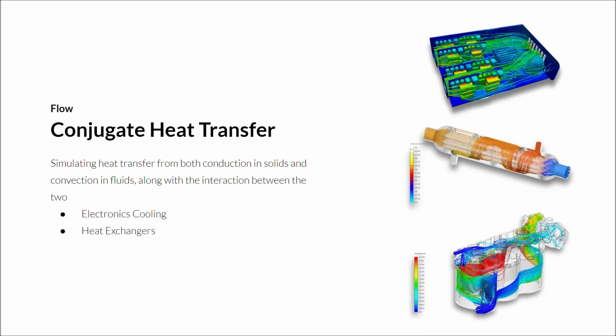We currently have two conjugate heat transfer modules, a version 1 and version 2. Version 1 is our standard old solver, but version 2 is a custom solver developed in-house and undergoing constant refinement. In general, version 2 will be faster and more accurate, but version 1 has slightly more features at the moment.